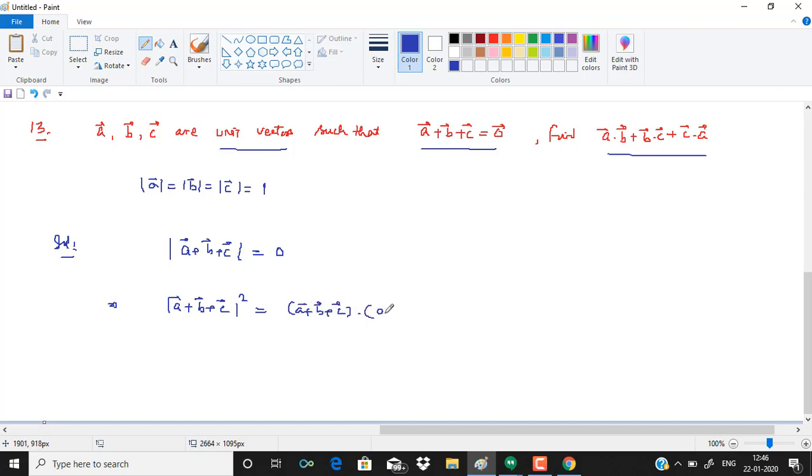If I square a plus b plus c, that should be (a plus b plus c) dot (a plus b plus c), which equals 0. Expanding this gives a dot a plus a dot b plus a dot c plus b dot a plus b dot b plus b dot c plus c dot a plus c dot b plus c dot c. Since magnitude of a, b, c is 1, this becomes 3 plus twice of (a dot b plus b dot c plus c dot a).